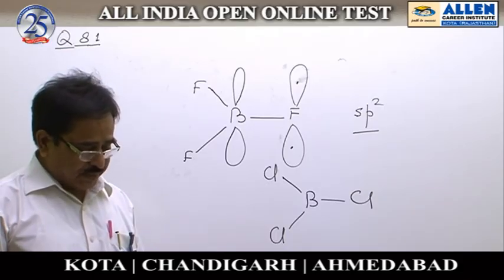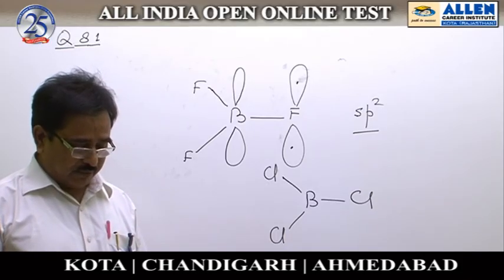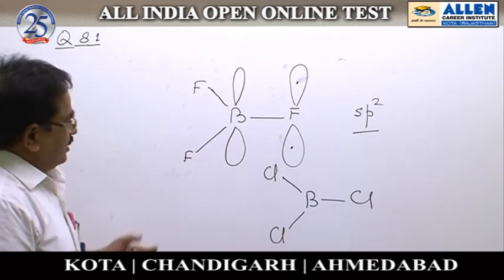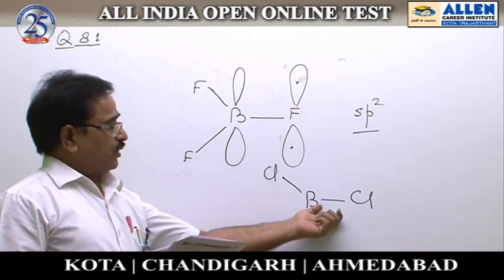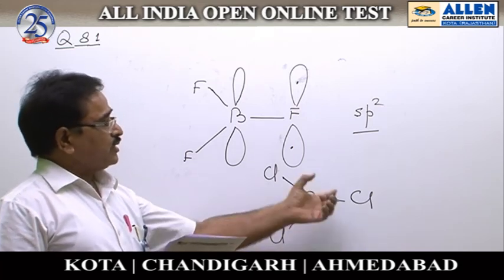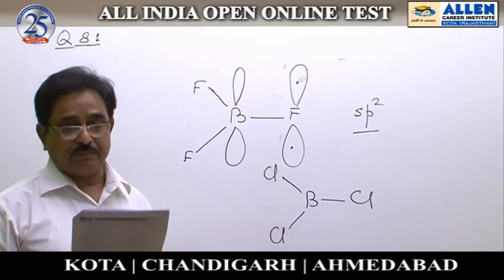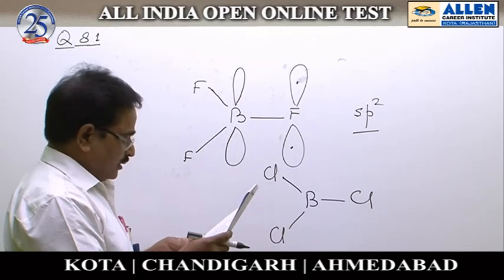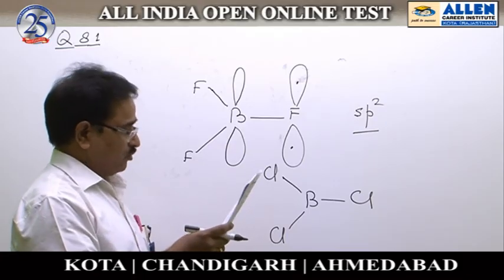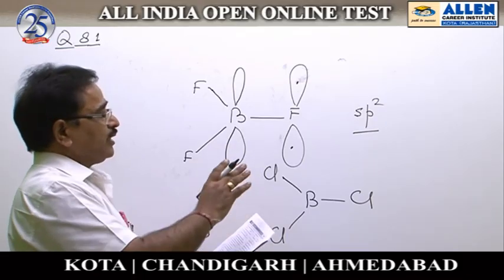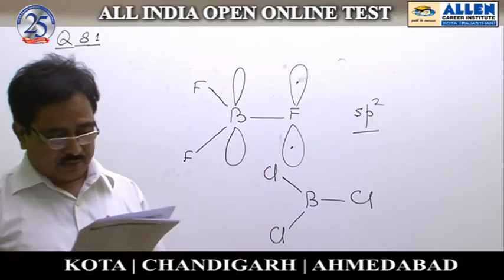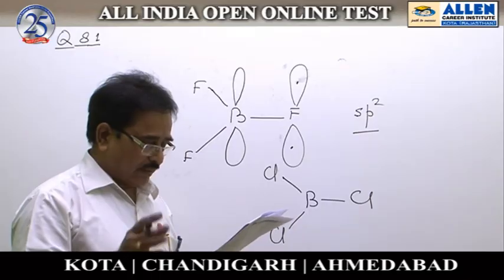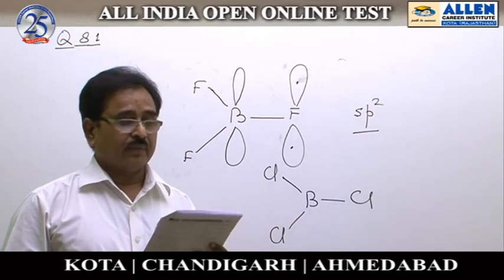The fourth option states that the pi bond order in each BF bond is 1/3, which is also a consequence of P-pi to P-pi back bonding. Therefore, the correct answer for question 81 is option one — planarity — because it results from SP2 hybridization, not from back bonding. The trigonal planar geometry is the main geometry due to SP2 hybridization.